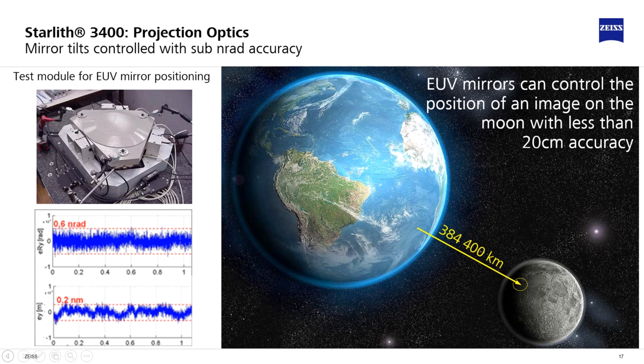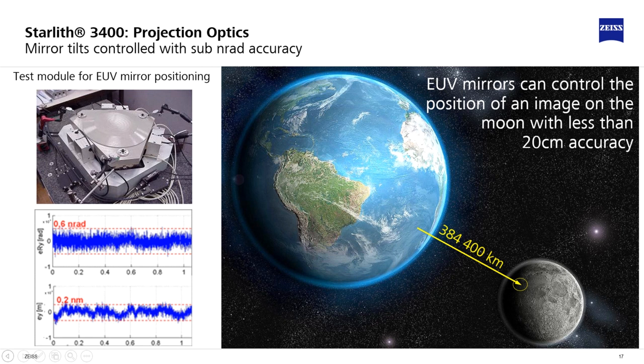To visualize what the specification of nanorad means, you could use the following analogy. If you would inflate the situation to the distance earth to moon, you could control the position of an image on the moon with less than 20 centimeters accuracy.